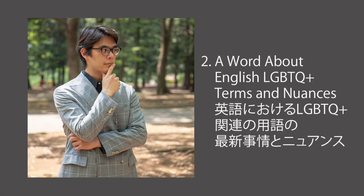2. 英語におけるLGBTQプラス関連の用語の最新事情とニュアンス。LGBTQプラスの運動の中心的な主張の一つは、性的指向（セクシュアルオリエンテーション）や性（ジェンダー）の多様性（ダイバーシティ）です。異性愛が唯一のあるいは最も望ましい性的指向だとするヘテロノーマティビティ（異性愛規範）や、男性と女性がどのように行動し、どうあるべきかのジェンダー規範へ疑問を投げかけようとしています。